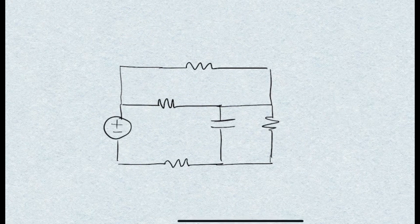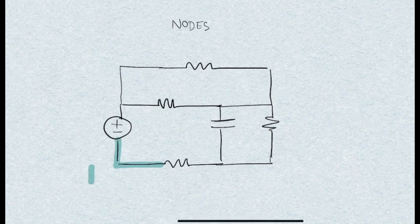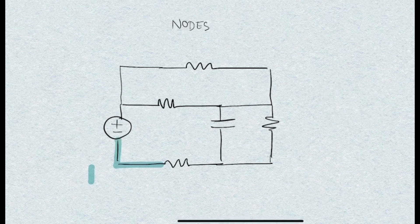During my early stages as a student learning about nodes, I found it a bit difficult to visualize them without highlighting the different nodes in the circuit with different colors. What I mean by highlighting is starting at a certain terminal of an electrical device. For instance, in our first node, we start at one of the terminals of the power supply and highlight all the paths until we reach a dead end — another terminal of another electrical component, which is the resistor.